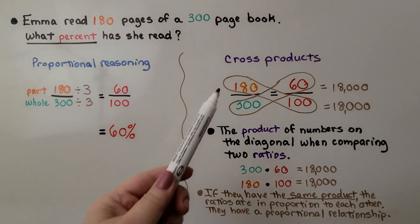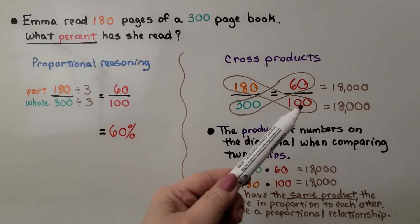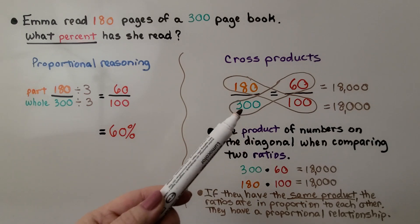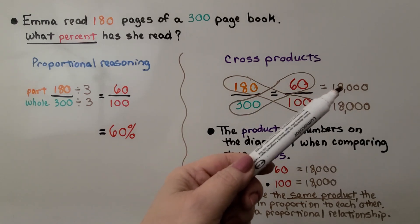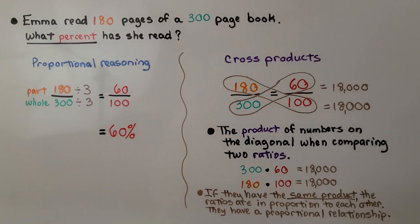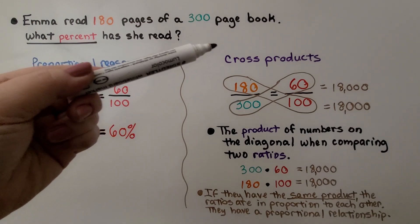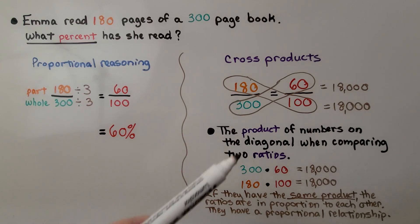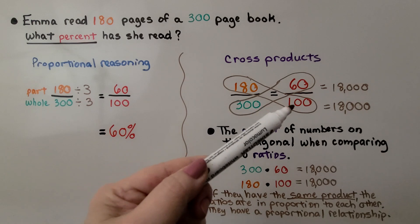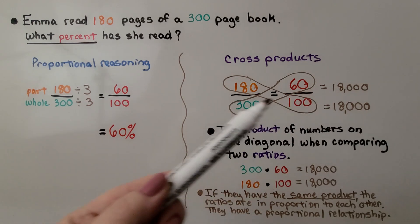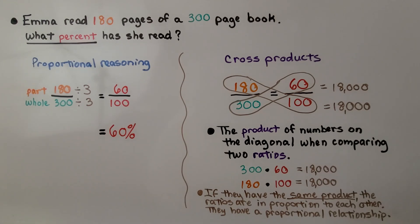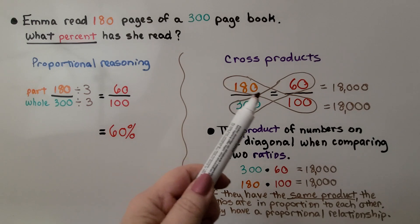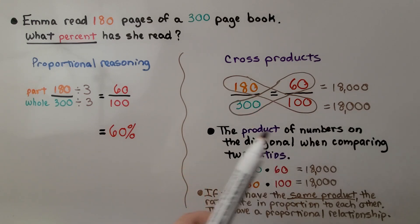For cross products, we can multiply 180 times 100, which gives us 18,000. And we can multiply 300 times 60, which also gives us 18,000. The product of numbers on the diagonal when comparing two ratios is the cross products. If they have the same product, the ratios are in proportion to each other. So cross products are when we multiply making a cross — coming down one way and then across and up the other way.